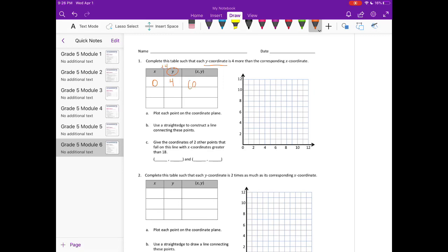My coordinate would be 0, 4. If my x-coordinate was 2, my y-coordinate plus 4 would be 6. And if my x-coordinate was 4, my y-coordinate 4 plus 4 would be 8.